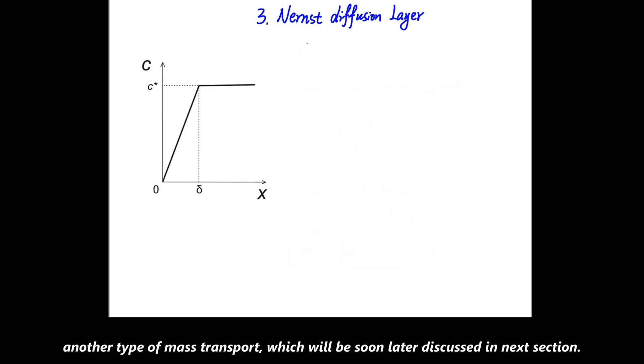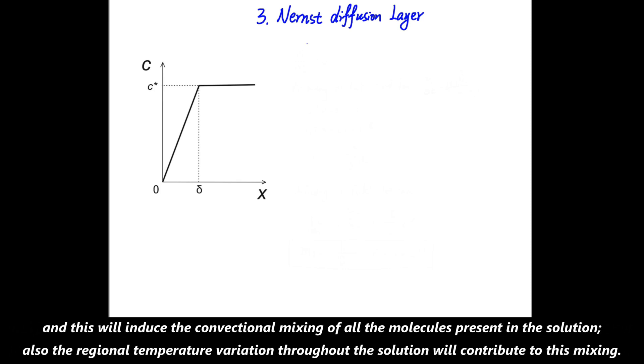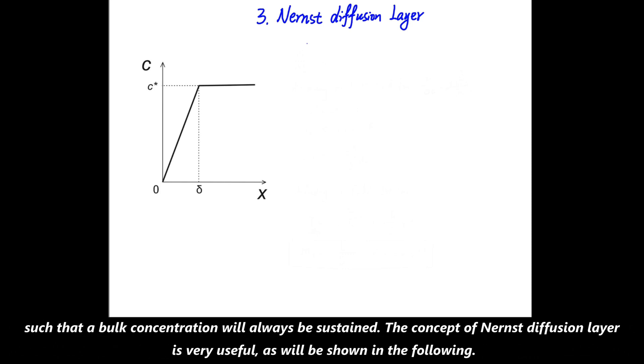The basic idea behind the Nernst diffusion layer is that the diffusion layer stops expansion due to the significant effects of natural convection, another type of mass transport, which will be discussed in the next section. Specifically, an electrode reaction very likely produces a molecular species of different density from the reactant species, and this will induce a convectional mixing of all the molecules present in the solution. Also, the regional temperature variation throughout the solution will contribute to this mixing. Consequently, at some point of x = δ, the concentration difference becomes so small and easy to eliminate by the convectional mixing such that a bulk concentration will always be sustained.